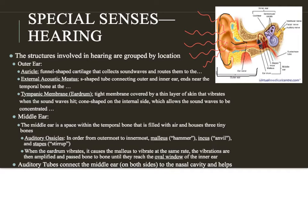That vibration then causes a chain reaction of structures deep within the ear. We get to the middle ear, which is embedded within the bone of the skull — specifically the temporal bone, the part of the skull surrounding the temporal lobe. There's a hollow space within that bone that the middle ear fills with very tiny bones called the auditory ossicles. There are three: the malleus, the incus, and the stapes.